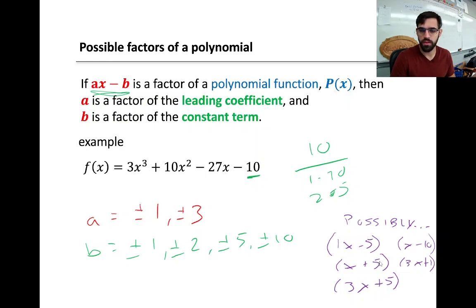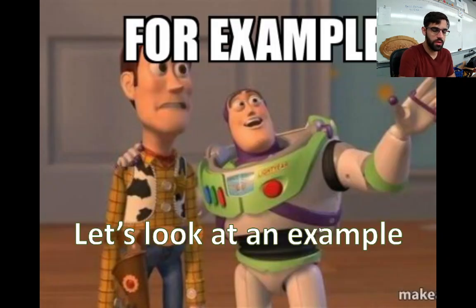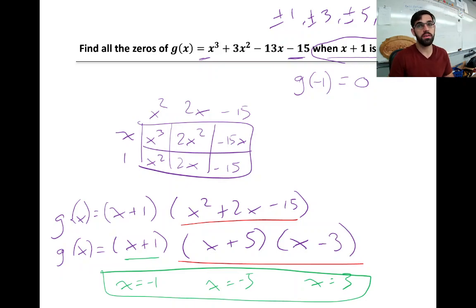So, like, if this one, the a is 1 and the b is 5, f of 5 over 1, or f of 5, if that equals 0, then I know this is one of our factors. So we can use this new knowledge with the factor theorem to just look at a function and tell what is a factor. It's a really quick computation you could do with a calculator to determine that.